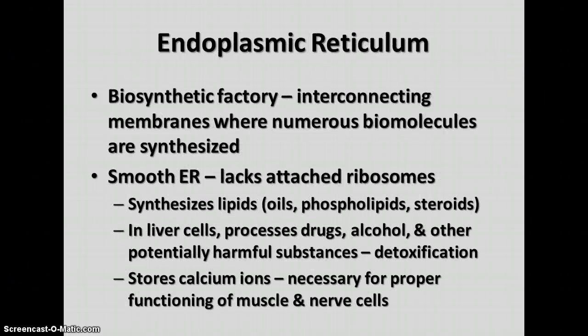The endoplasmic reticulum is the factory where a lot of biomolecules are synthesized — the proteins and lipids that we talked about in our unit on the molecules of cells are put together in the endoplasmic reticulum. There are two main kinds, usually called ER for short. The smooth ER does not have attached ribosomes. In the smooth ER, lipids are put together: oils, phospholipids, steroids, and other lipid molecules needed by cells.